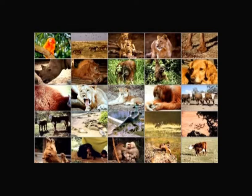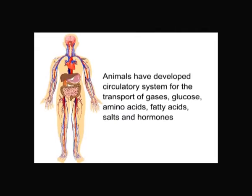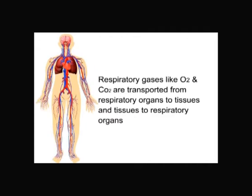Organisms need food, water, and oxygen for survival; these need to be transported to all parts of the body. Animals have developed a circulatory system for the transport of gases, glucose, amino acids, fatty acids, salts, and hormones. Respiratory gases like oxygen and carbon dioxide are transported from respiratory organs to tissues and from tissues to respiratory organs through the circulatory system.